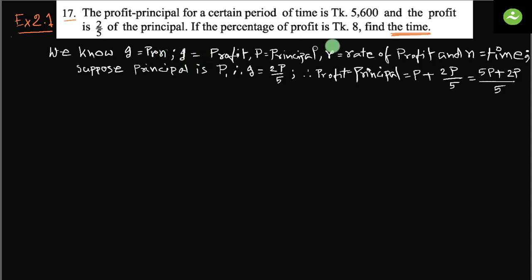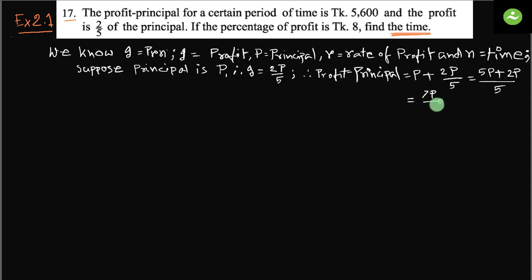So it's easy to use this formula and find the value of time. Suppose the principal is P. Then I equals two-fifths of P, so two P by five. And profit plus principal equals P plus two P by five, which equals five P plus two P by five, that equals seven P by five. So we know the profit plus principal is taka 5600, so seven P by five equals taka 5600.